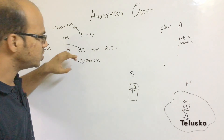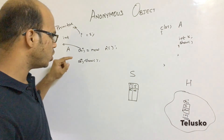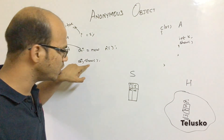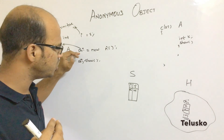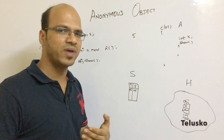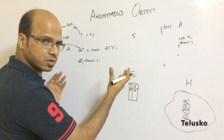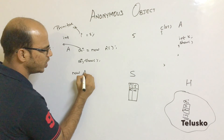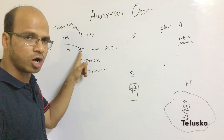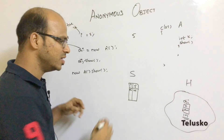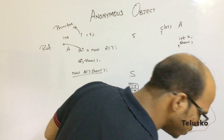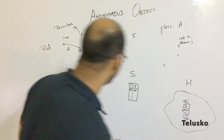Now consider this: how many times are you actually using this object? If you're using it only once — just to call 'show' — then why create a reference variable at all? Just like if you have a value of 5 and you don't want to reuse it, you don't need a variable. So if you only want to call 'show' once, can you directly write new A().show()? The advantage is there's no referenced object, so it won't consume any stack memory — only heap memory.